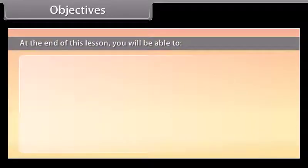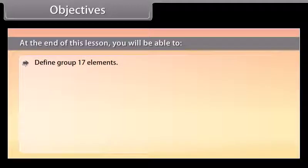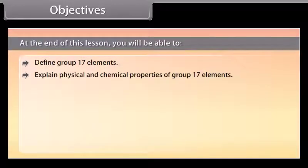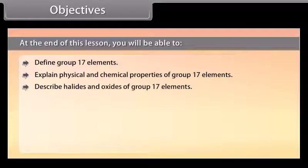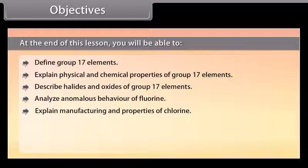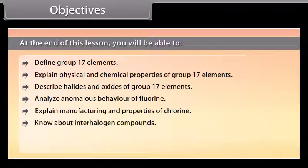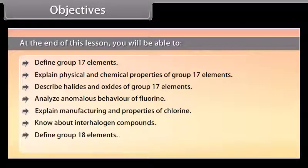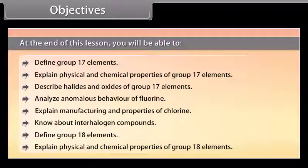At the end of this lesson, you will be able to define group 17 elements, explain physical and chemical properties of group 17 elements, describe halides and oxides of group 17 elements, analyze anomalous behavior of fluorine, explain manufacturing and properties of chlorine, know about interhalogen compounds, define group 18 elements, and explain physical and chemical properties of group 18 elements.